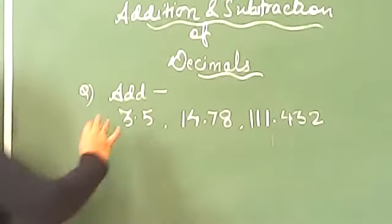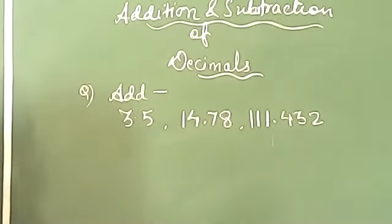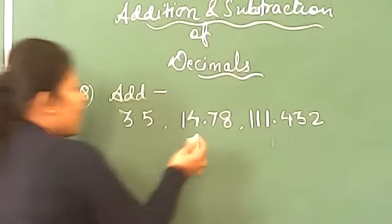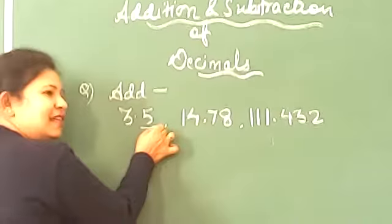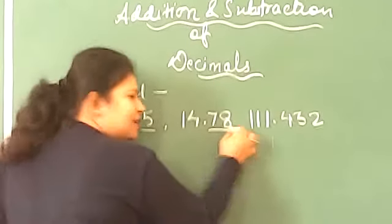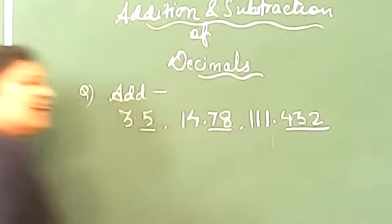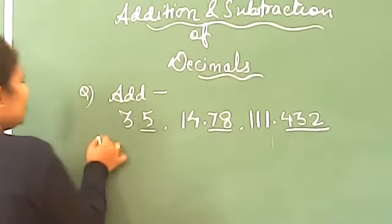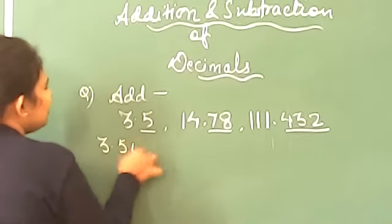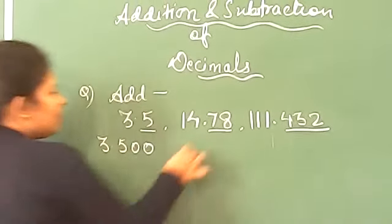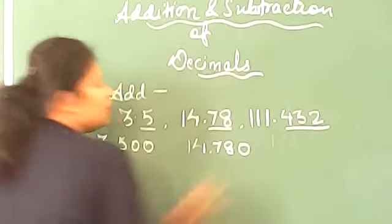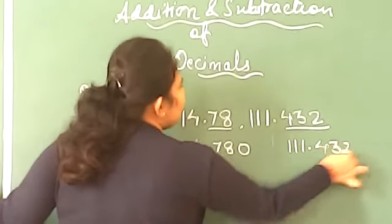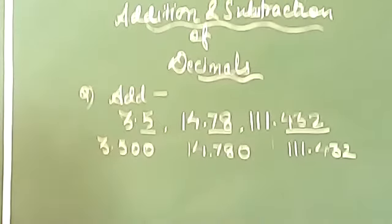Now understand what we will do. The first step will be to convert to like decimal. After decimal, check whose has the most digits. One digit, two digits, and here three digits. So we have to make all of them three digits. So what we'll do here, it will give you 3.500, 14.780, and this is 111.432 which is already in 3 digits.